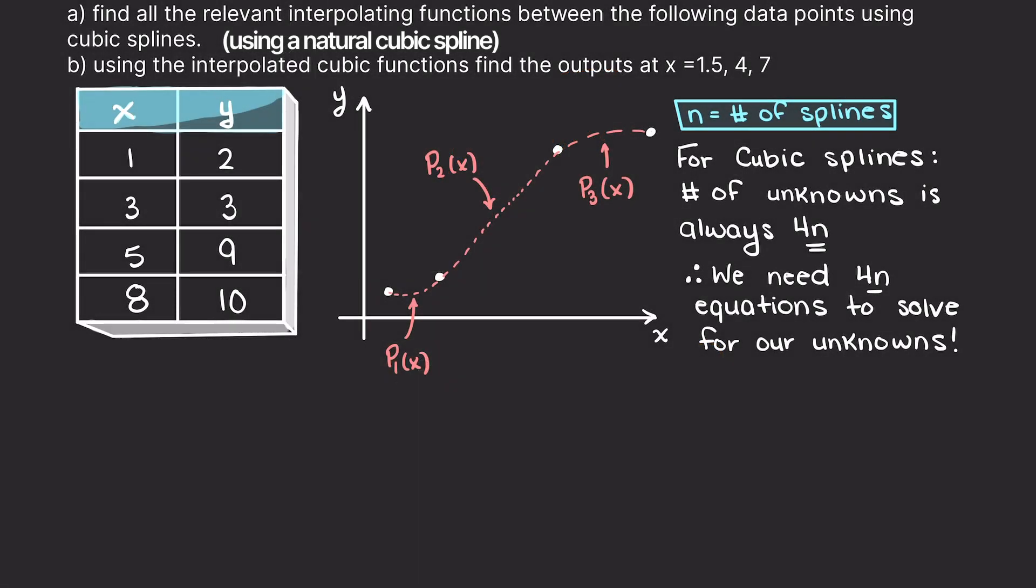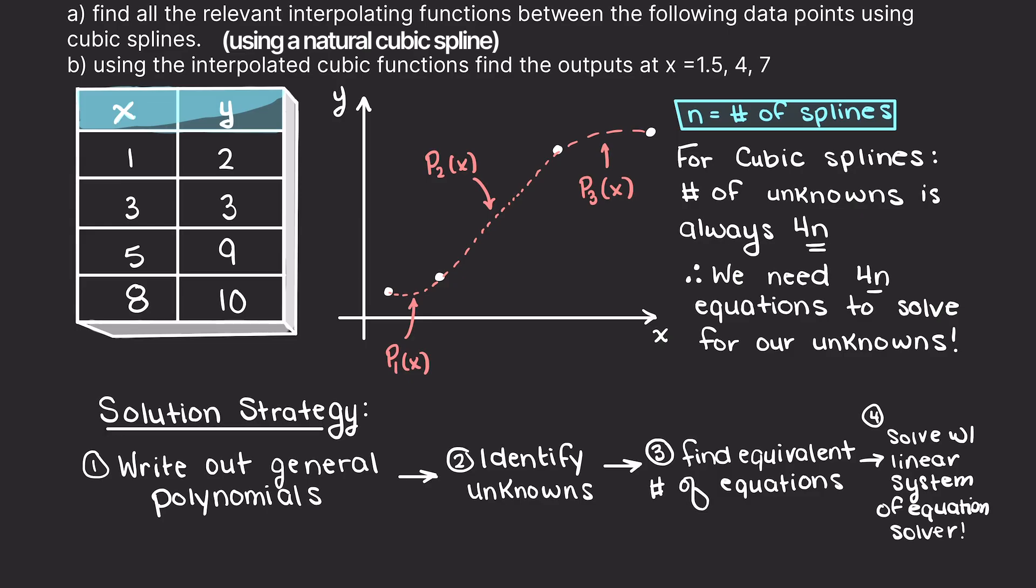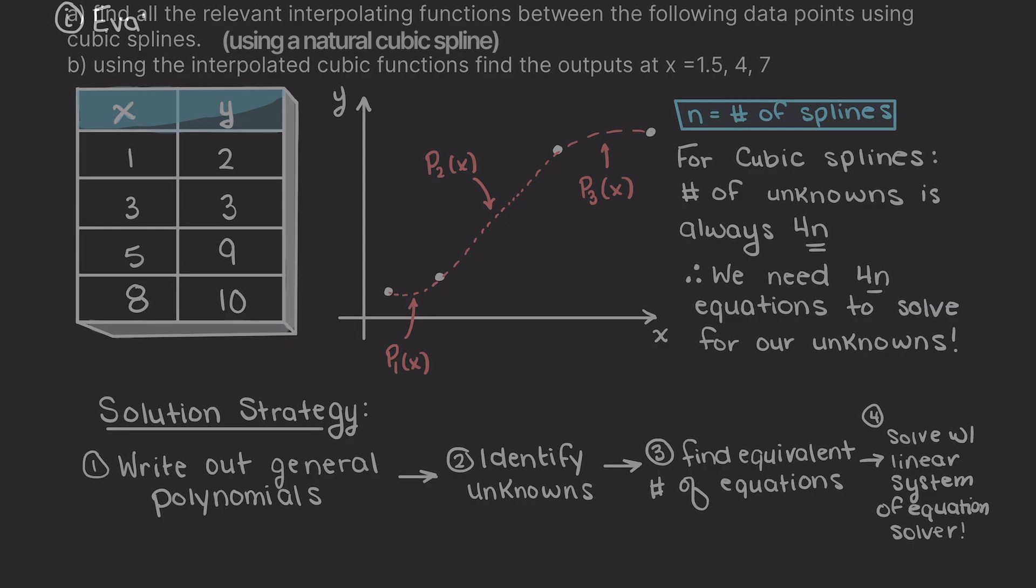So, let's quickly make a plan of attack on how we want to go about solving this problem. First, we need to find 12 equations such that we can solve for our 12 missing coefficients. Once we have the 12 equations, we will plug them into a linear system of equations solver and then be complete with this problem. But stay with me and we'll walk through this problem fully together. So, let's begin working out how to find our 12 equations.